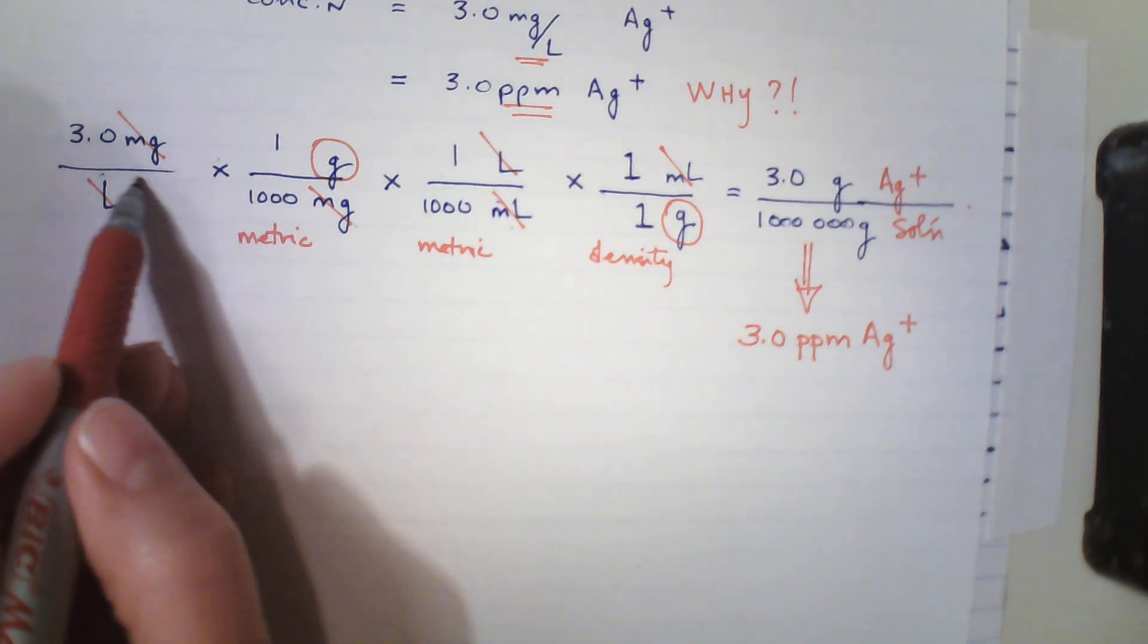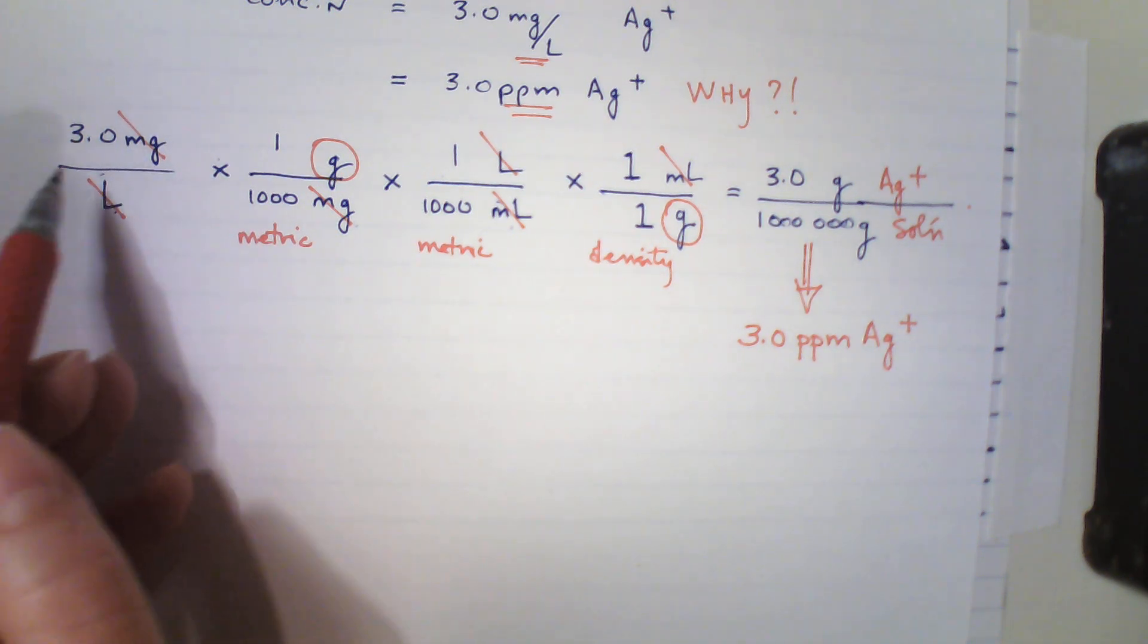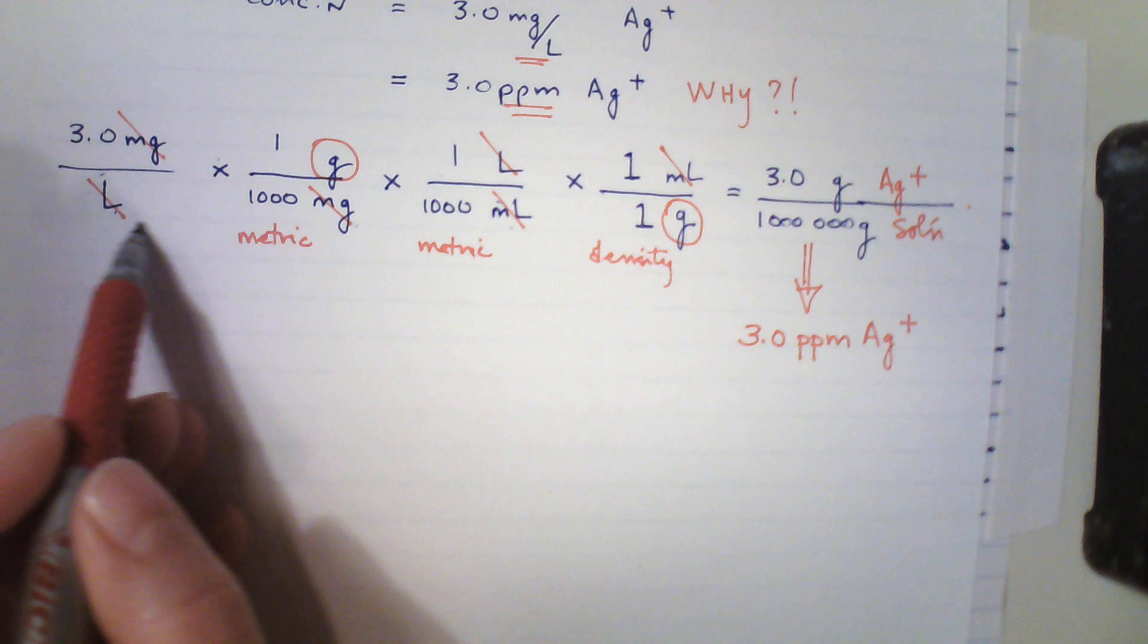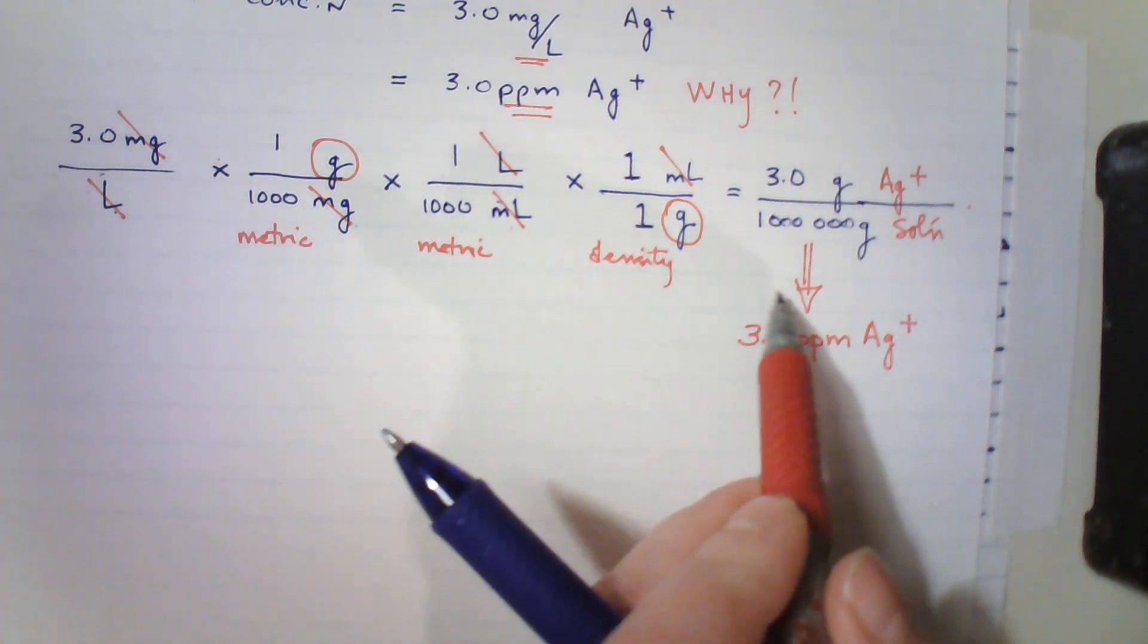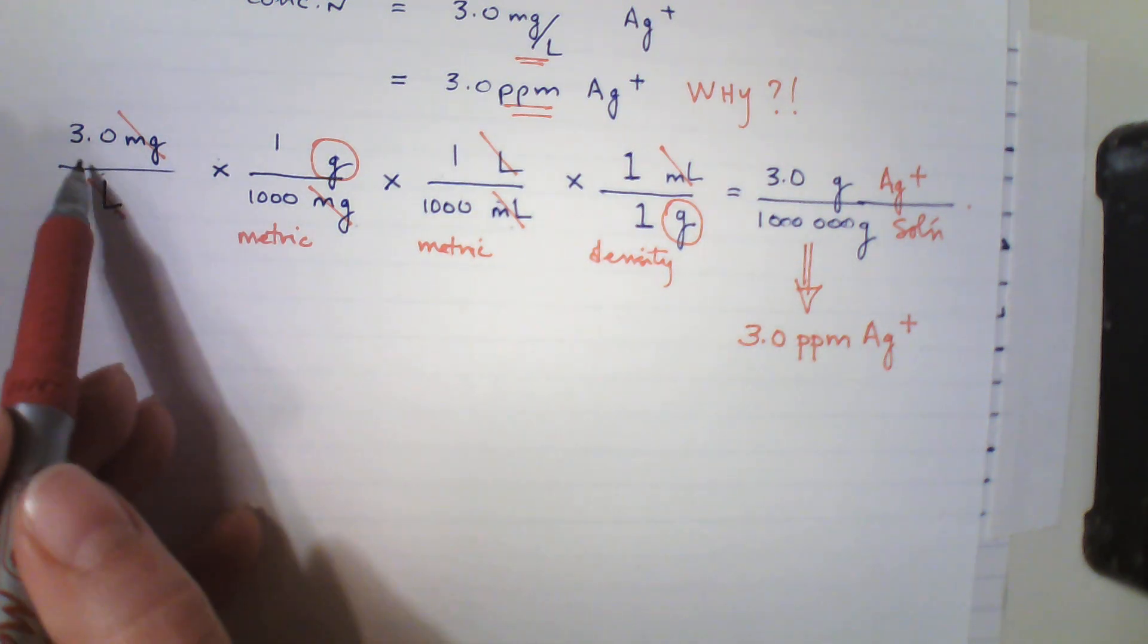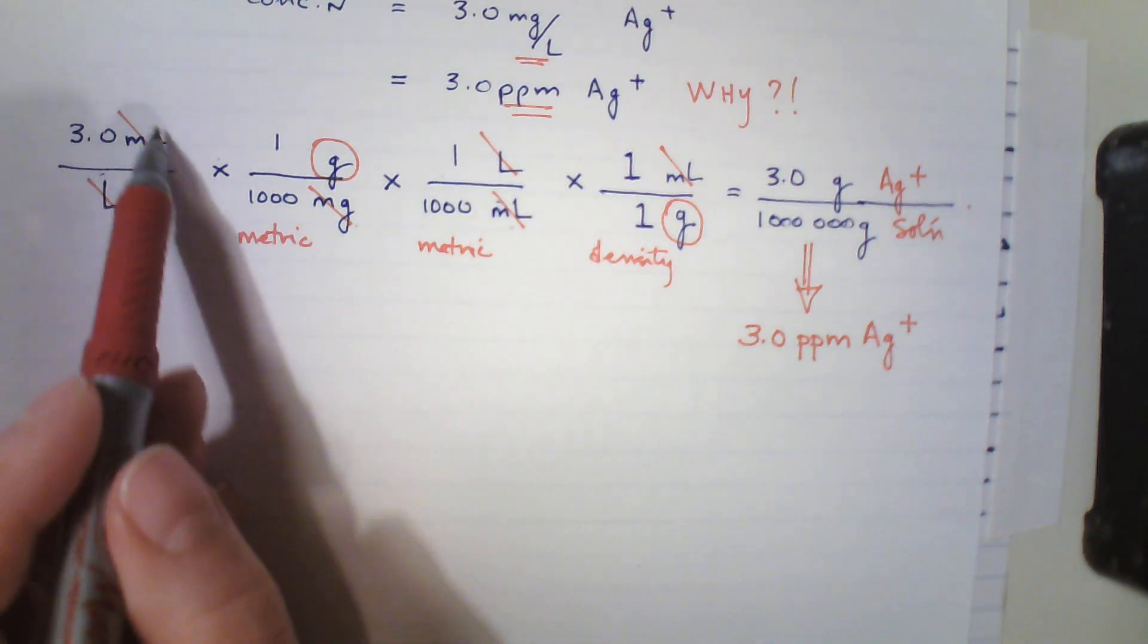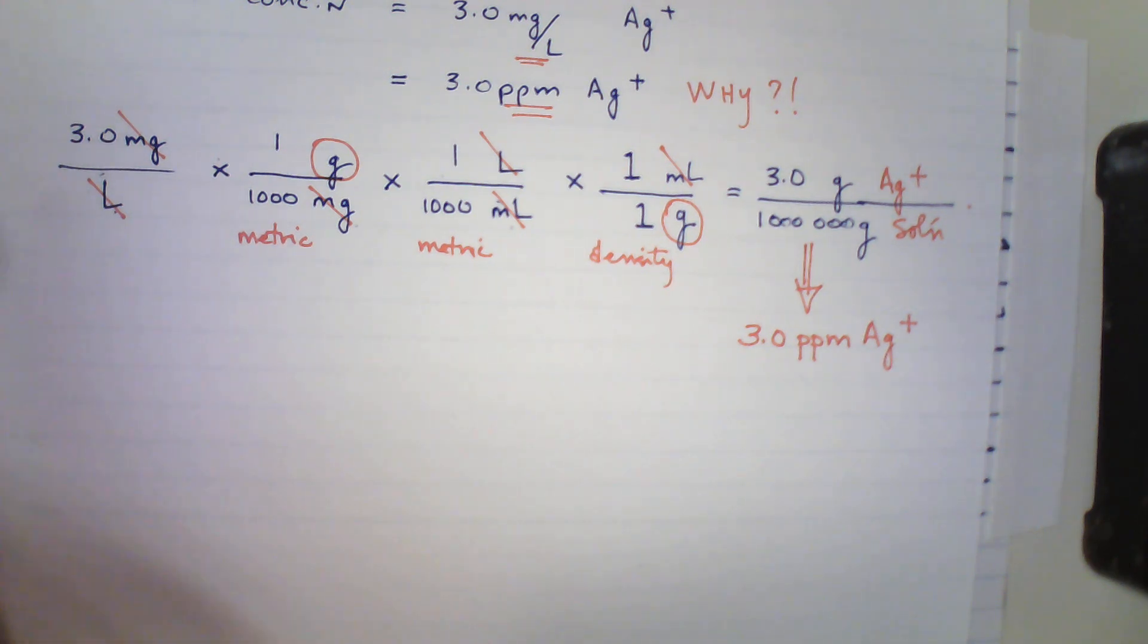So, because of the value of a milligram, and because of how many mils or grams there are in a liter, then the expression of milligrams per liter is always the same as part per million. So I could start with any example, and I encourage you to do that. Take another example, and change the number instead of 3.